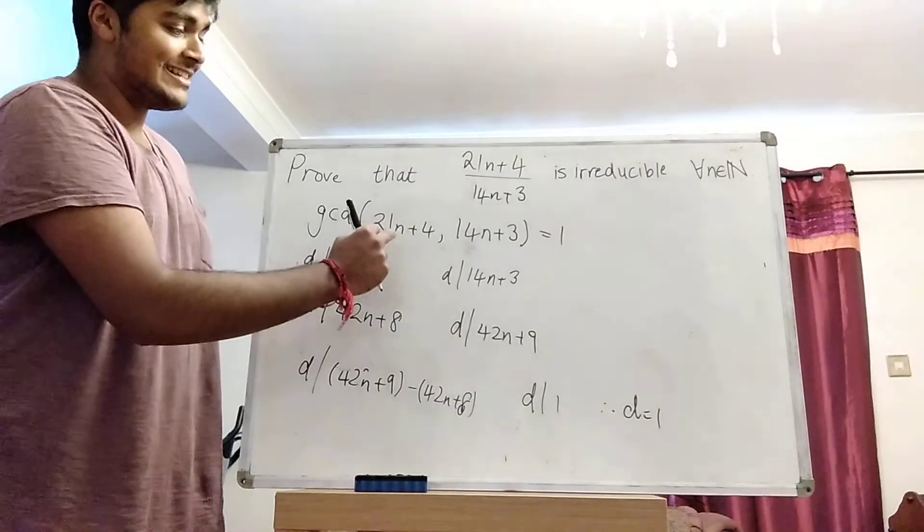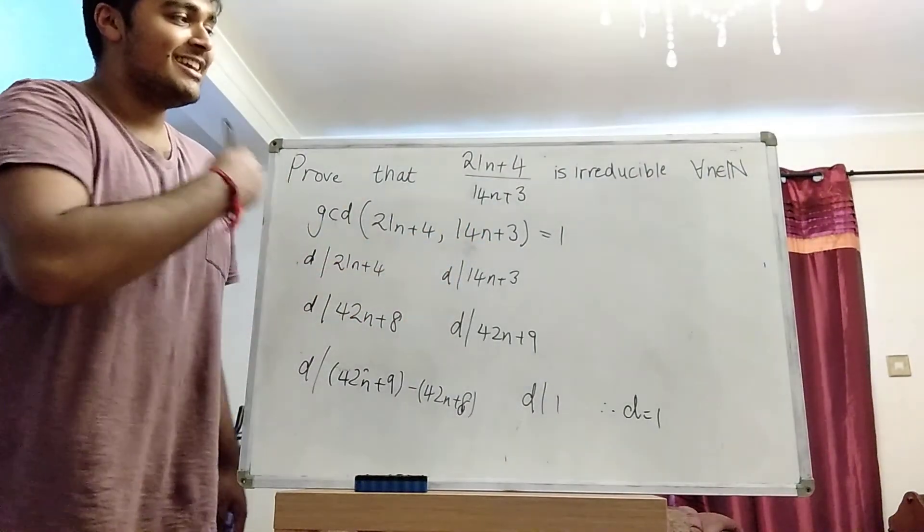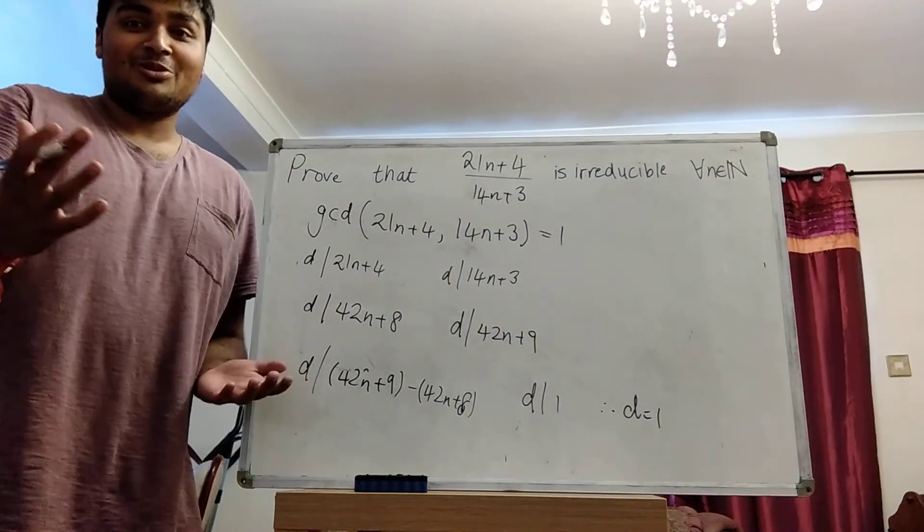And therefore, the greatest common divisor of these two numbers here is 1. And that's the problem solved in, what, two minutes?